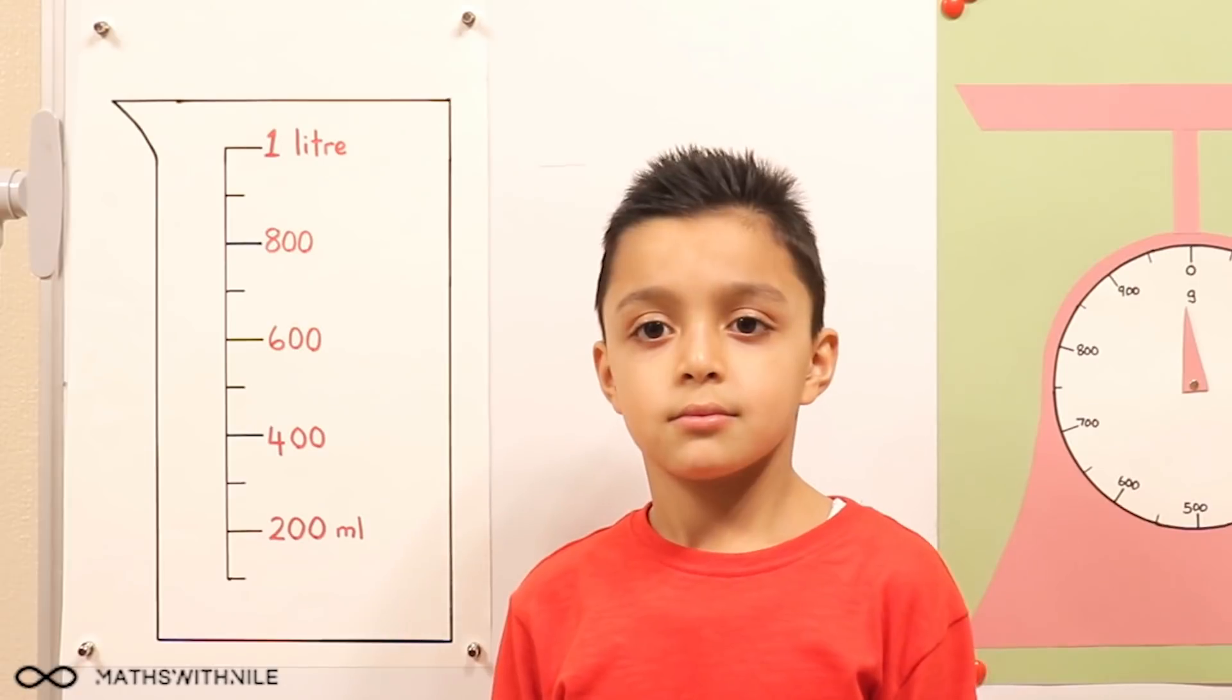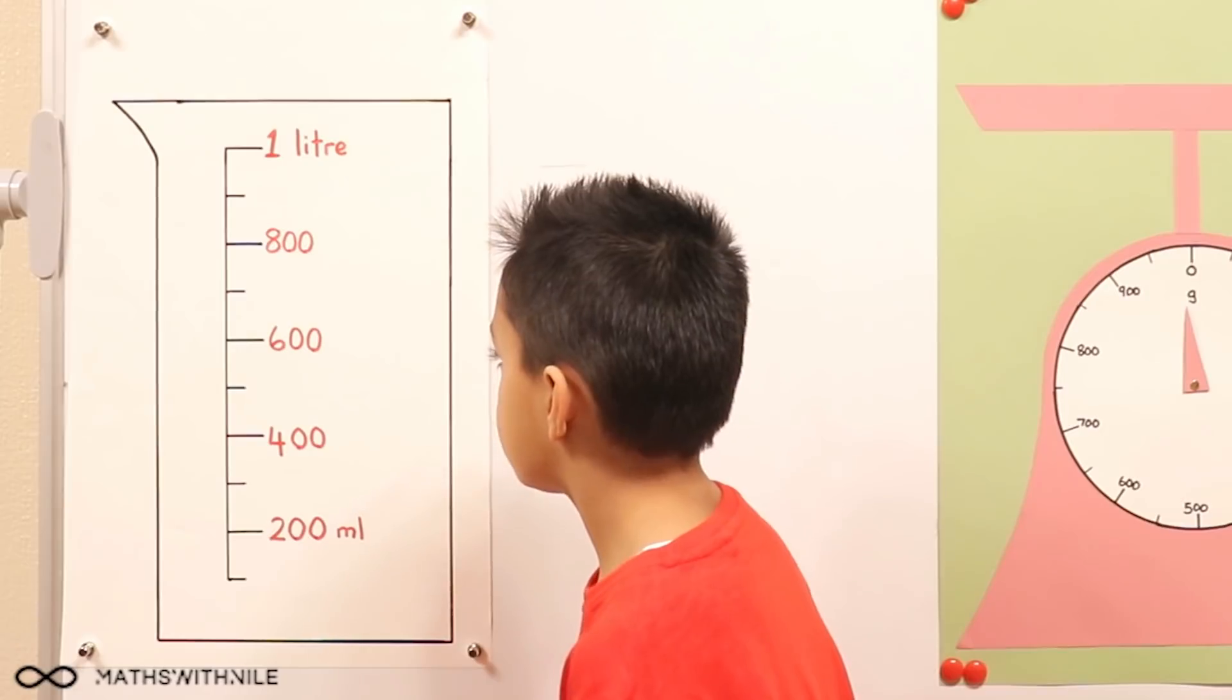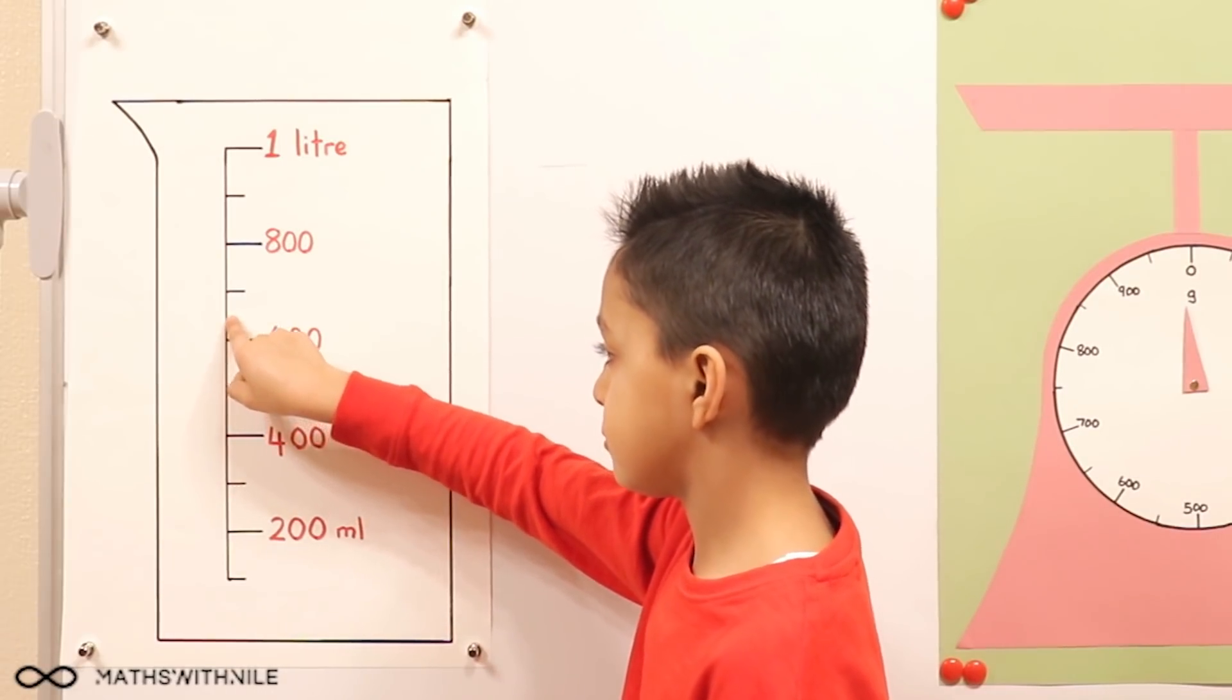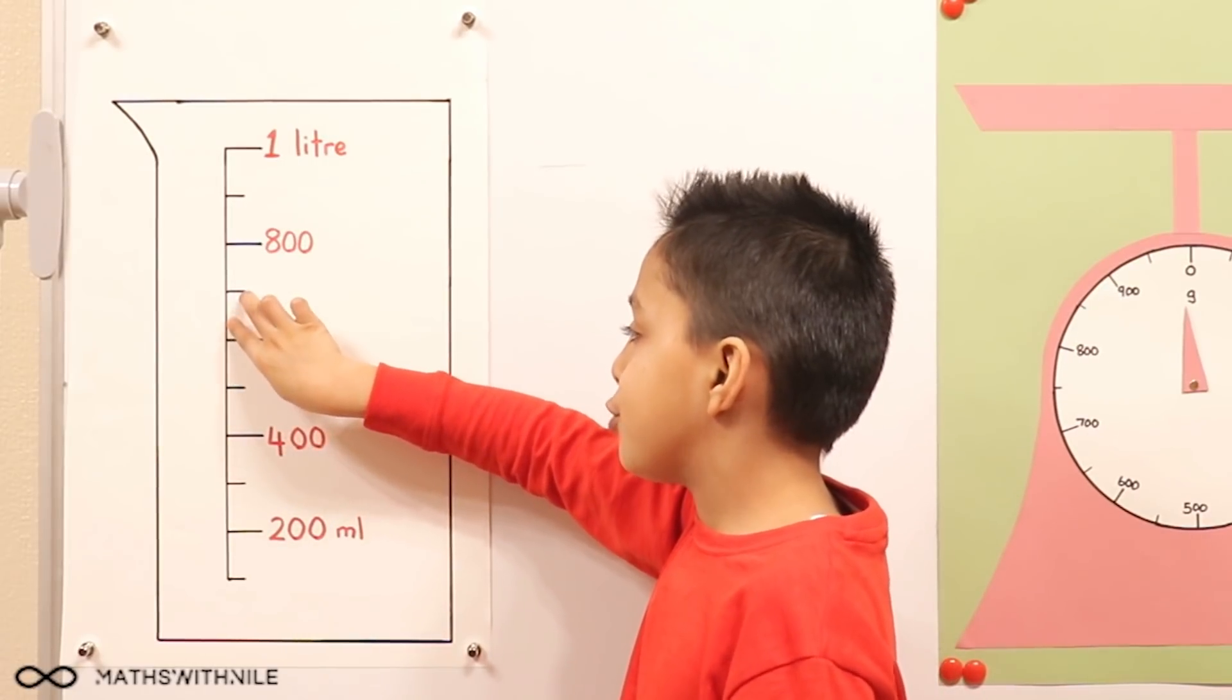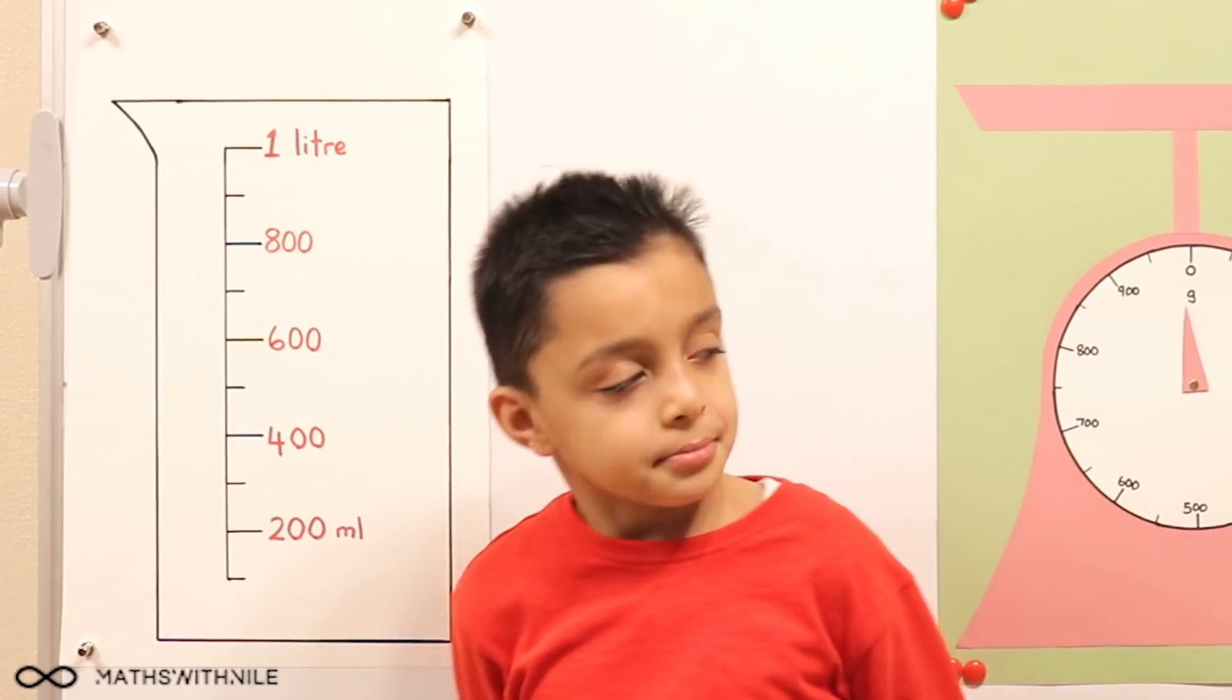So just to finish off with that one, where is 650 milliliters? Here. Halfway between 600 and 700. Okay, very good.